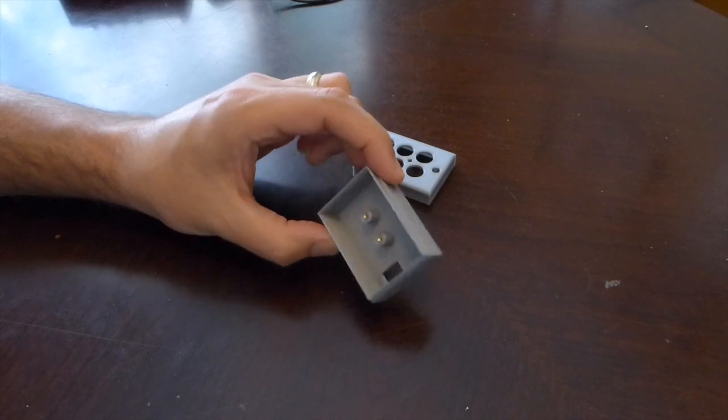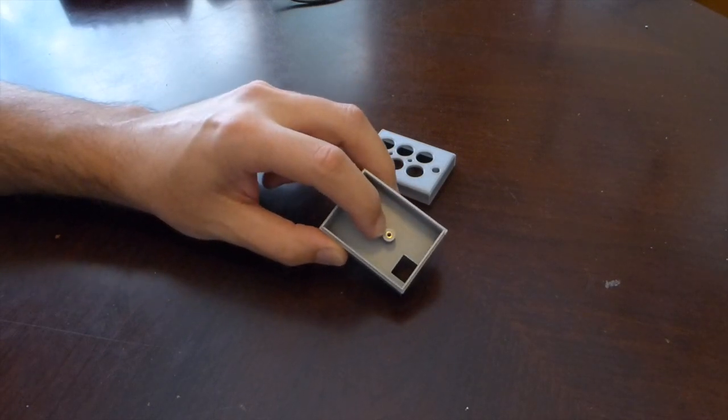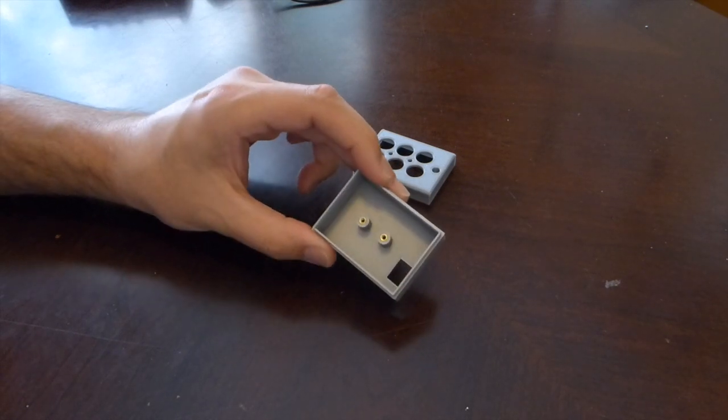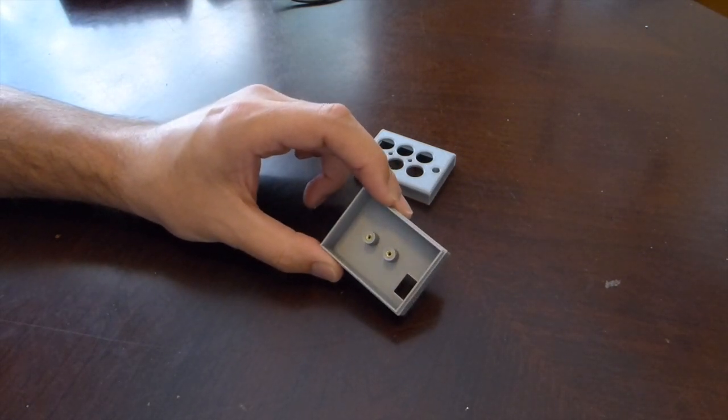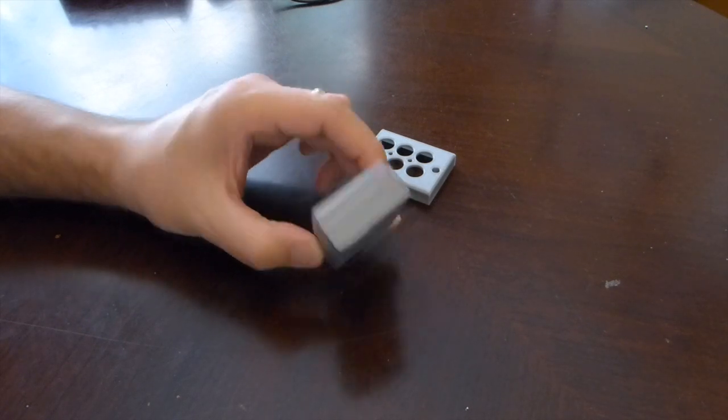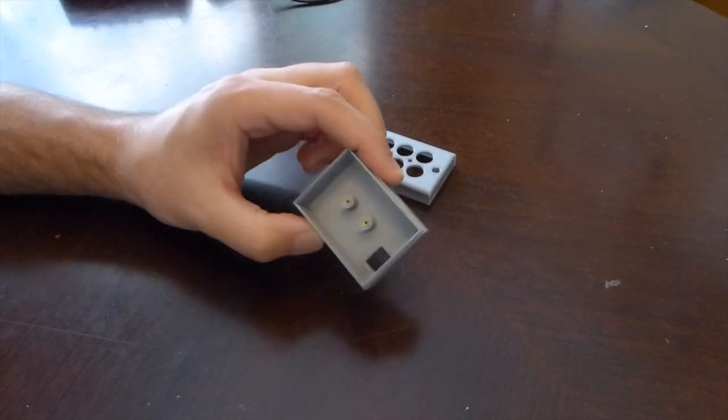And then on the inside I have risers that come up with heat set inserts. These are little brass heat set inserts, and they work really well with 3D printed parts, because you basically just set them in there and they're nice and secure. And then you can have a screw that goes into those guys.